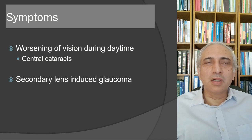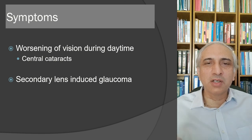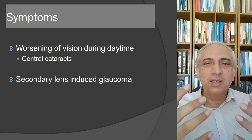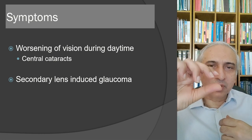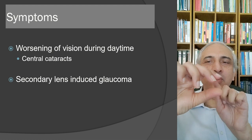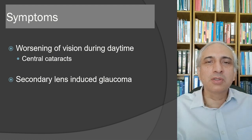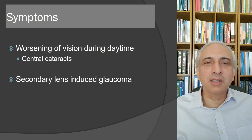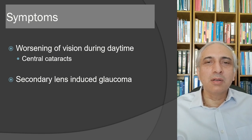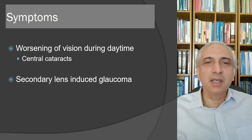Further symptoms include worsening of vision during daytime due to central cataracts — glare occurs and the pupil constricts, significantly reducing vision with a small posterior subcapsular opacity. In nuclear sclerotic cataract, patients need more light and have problems especially at night, as less light reaches the retina.